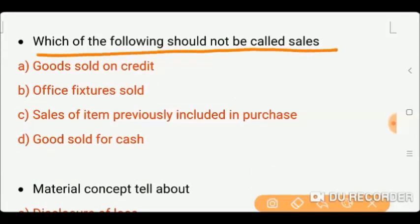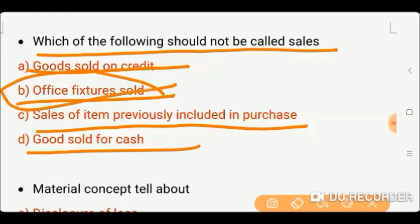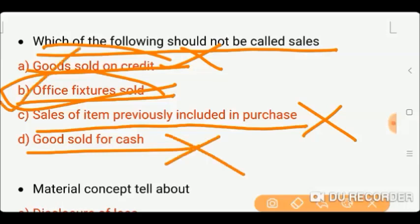Next question: Which of the following should not be called sales? Options: goods sold on credit, office equipment sold, sales of items previously included in purchases, or goods sold for cash. The correct answer is option B — office equipment sold — because it is not part of your regular business activity. Goods sold on credit, previously purchased items sold, and goods sold for cash are all regular sales. So option B is correct.